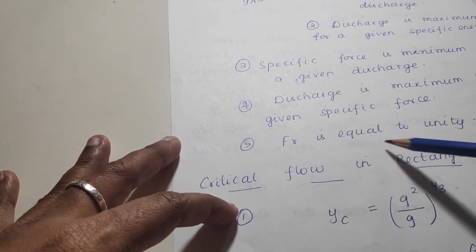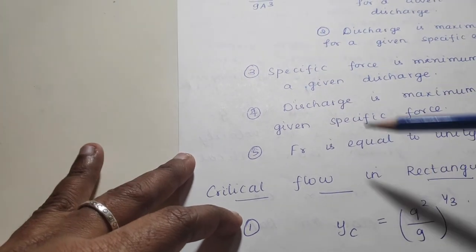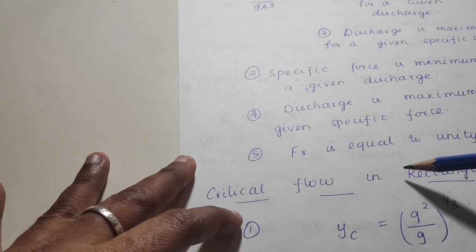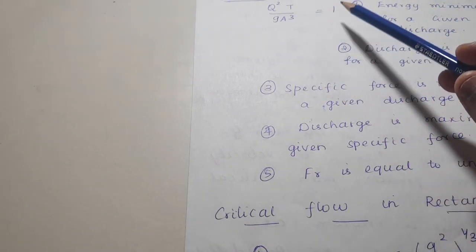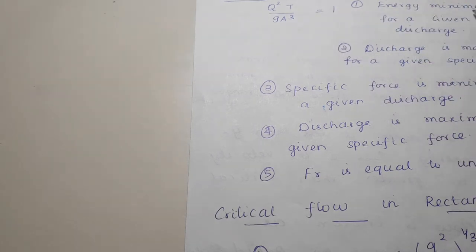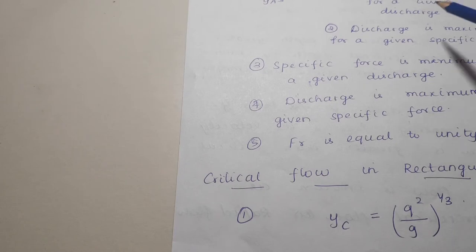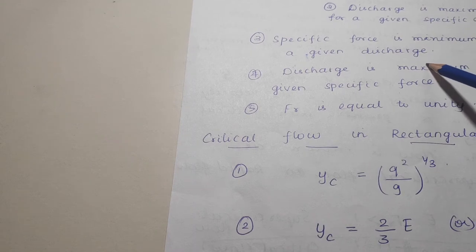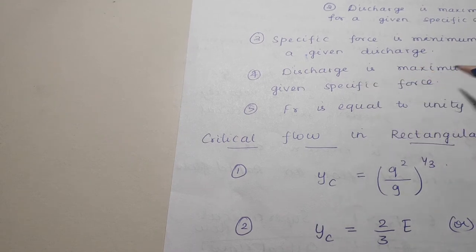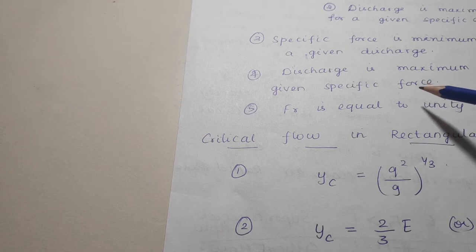The last point is Froude number equals unity — Fr = 1 at critical condition. So to summarize: the condition is q²T divided by gA³ equals 1; energy is minimum for a given discharge and discharge is maximum for that energy; specific force is minimum for a particular discharge and discharge is maximum for that specific force; and Fr equals unity.